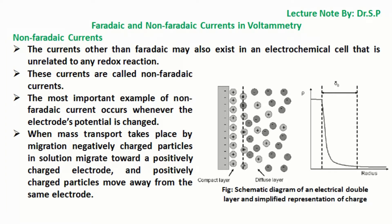Non-faradaic currents. The currents other than faradaic may also exist in an electrochemical cell that is unrelated to any redox reaction. These currents are called non-faradaic currents. The most important example of non-faradaic current occurs whenever the electrode's potential is changed.